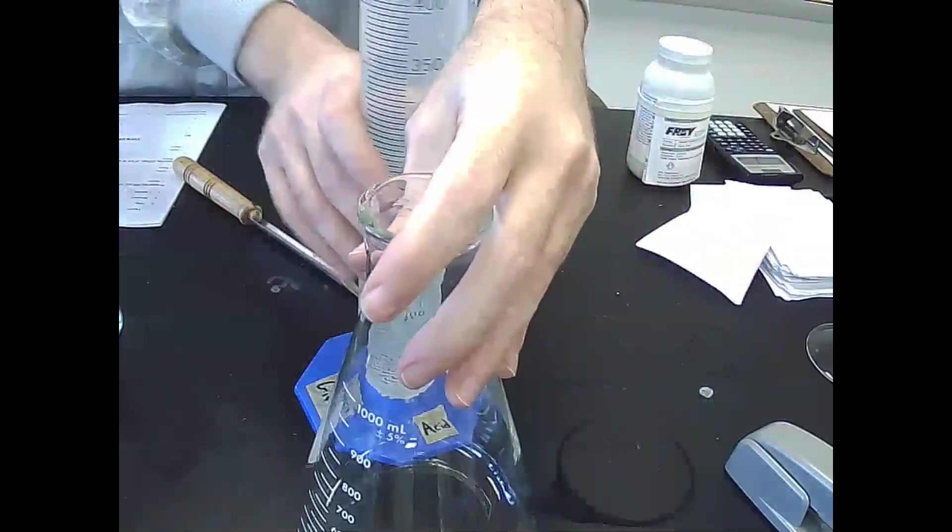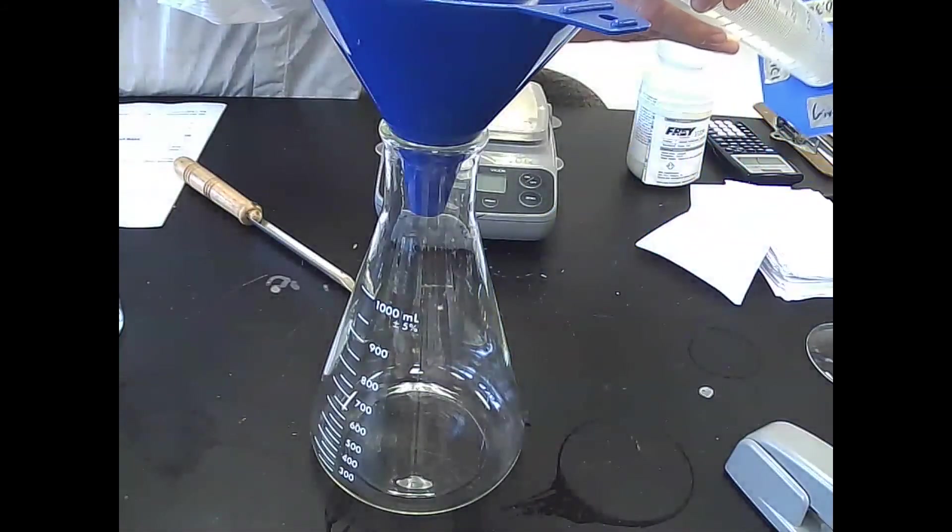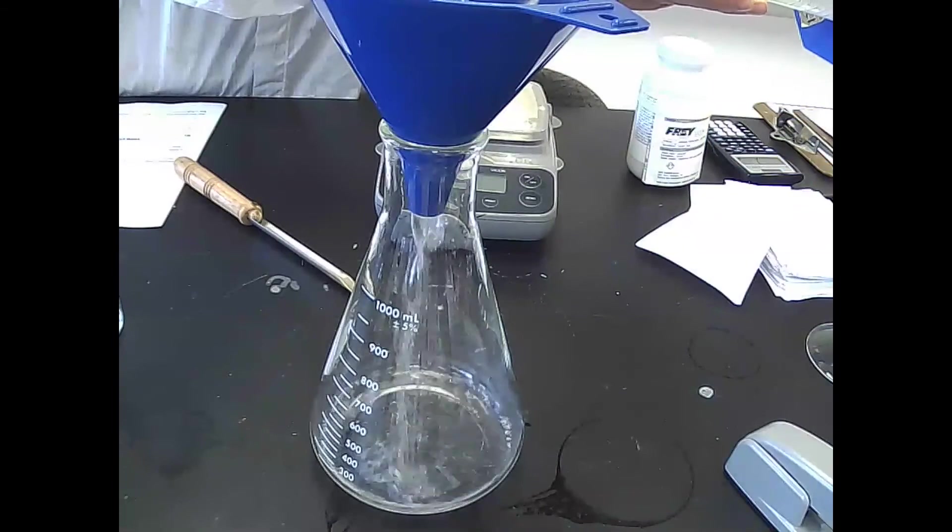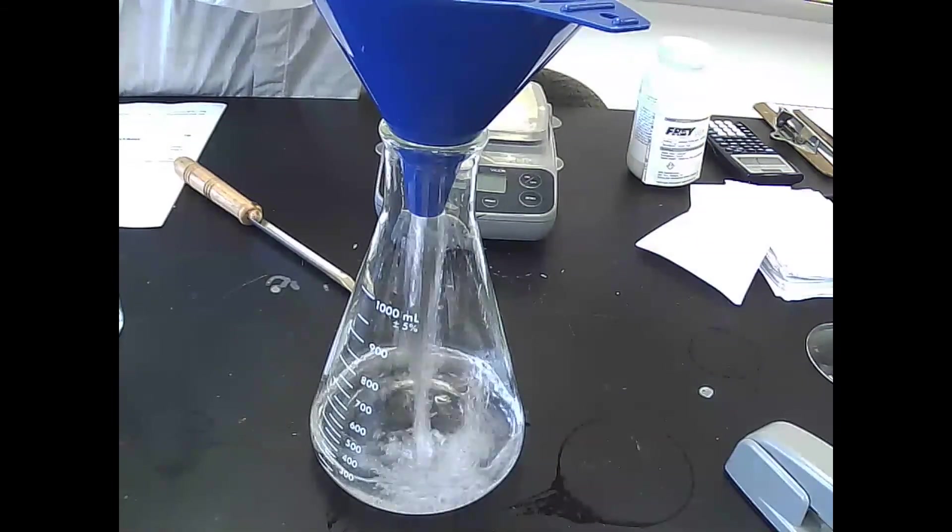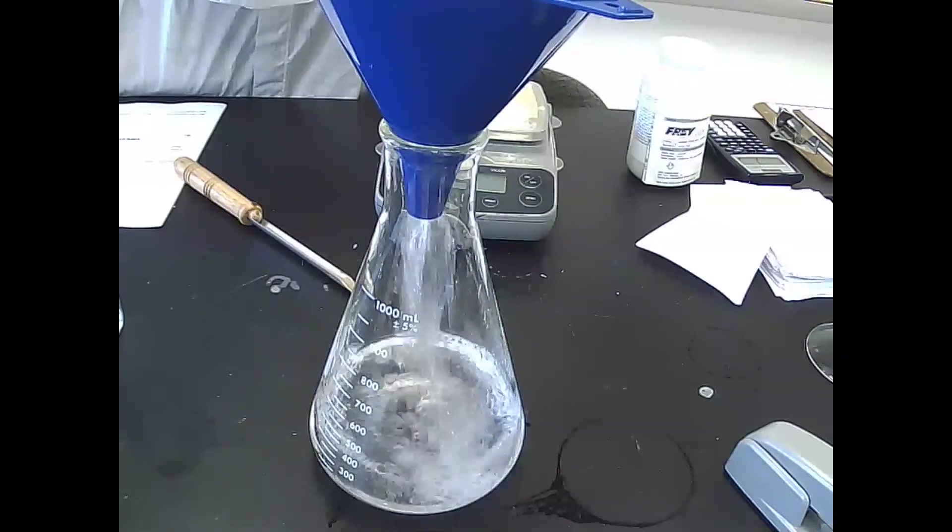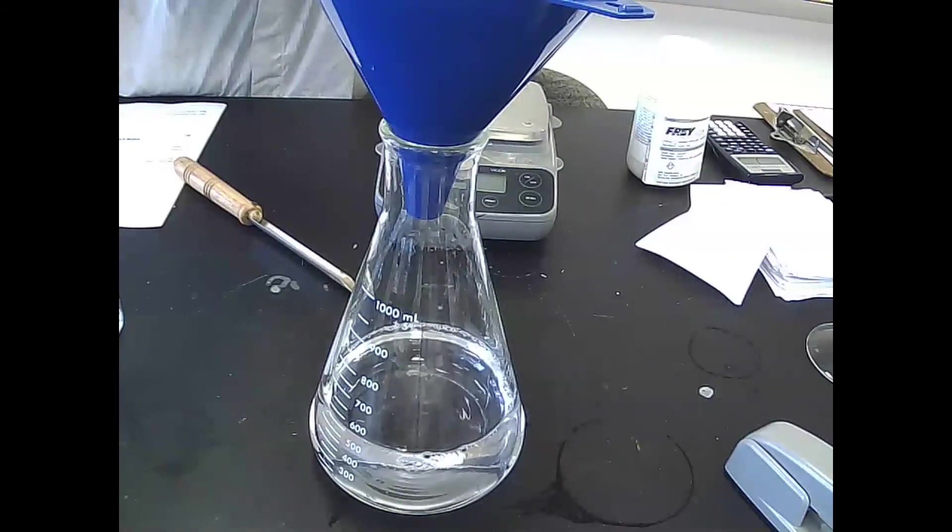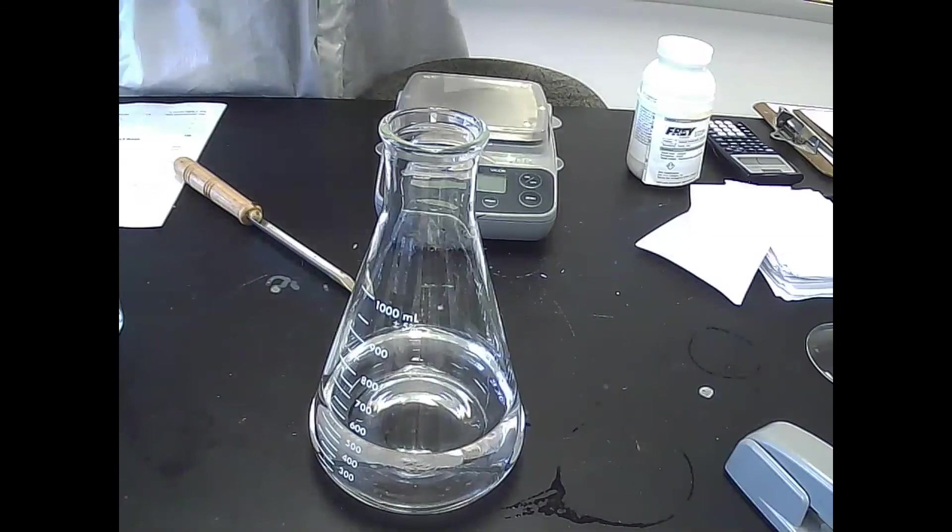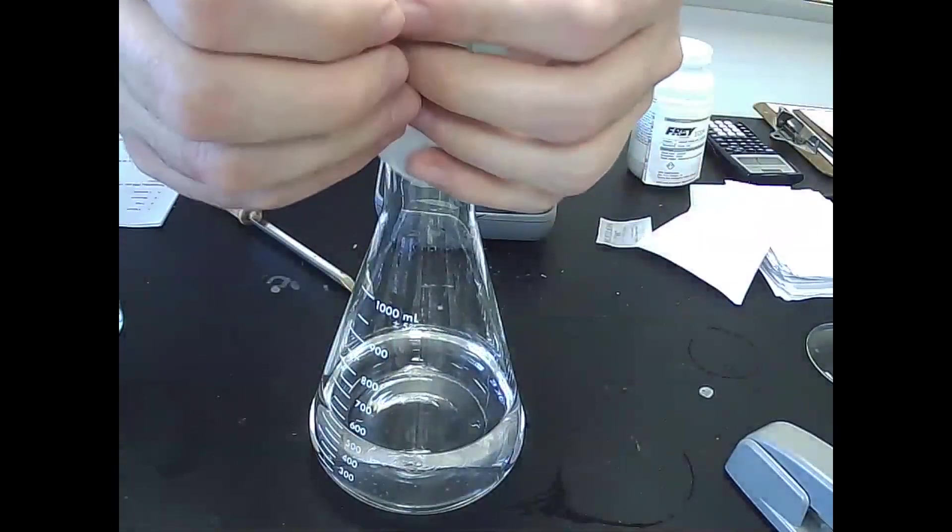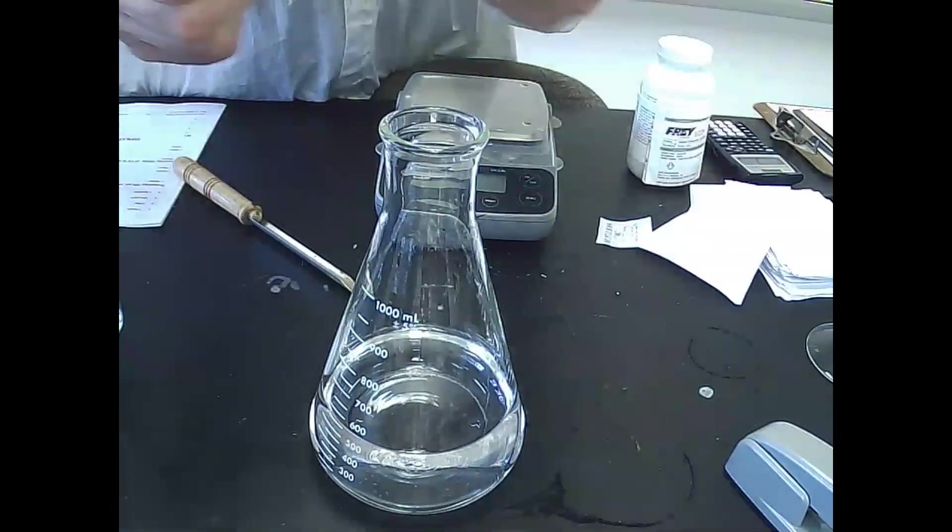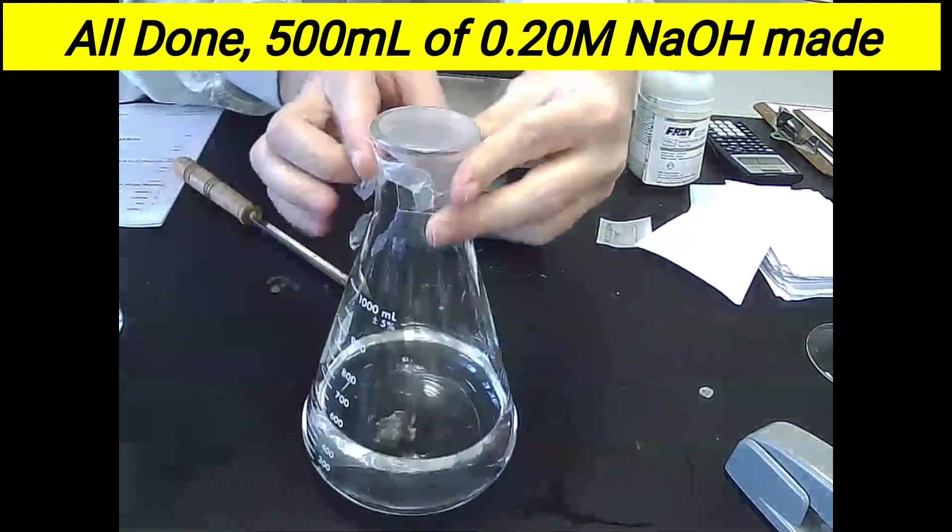And we'll then transfer it into the flask for storage, using the parafilm to seal it and make it airtight. This is the known mix that you will test your chemicals off of come next week. Parafilm, stretch, stretch, pat, and that's it.